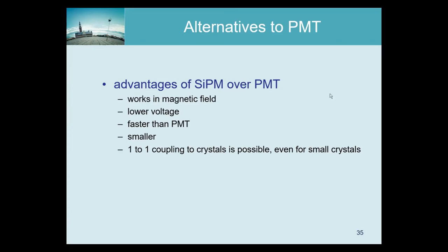Comparing silicon photomultipliers with PMTs: SiPMs can work in a magnetic field while PMTs cannot. SiPMs operate at much lower voltage than PMTs. SiPMs are faster than PMTs — or can be, if well designed — which is why they are replacing PMTs even in applications where no magnetic field is present.